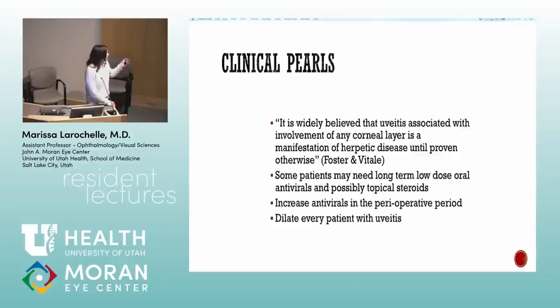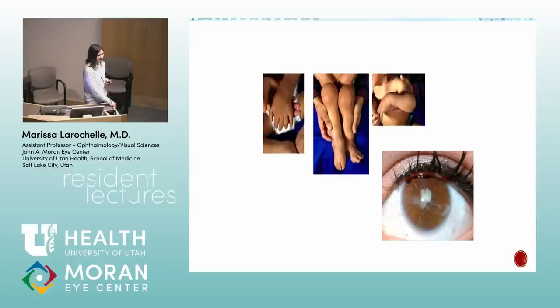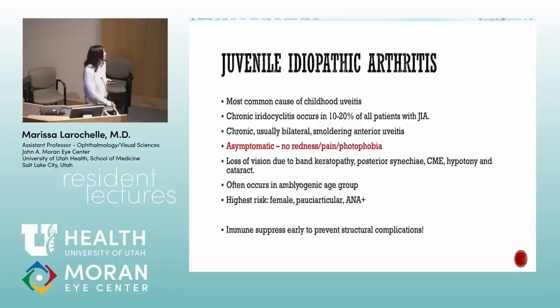Clinical scenario: a little girl with swollen joints and white deposits on the front of her cornea — band keratopathy and JIA. JIA uveitis is typically asymptomatic. Patients don't get red eyes, pain, or photophobia.